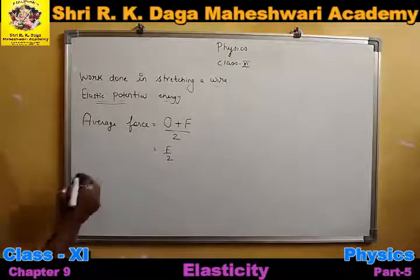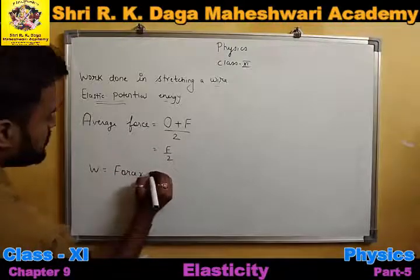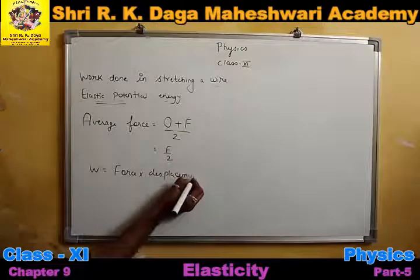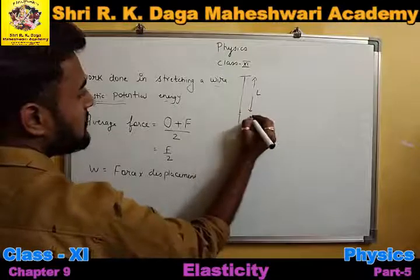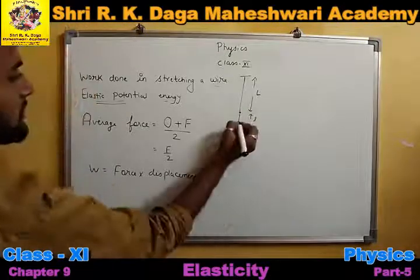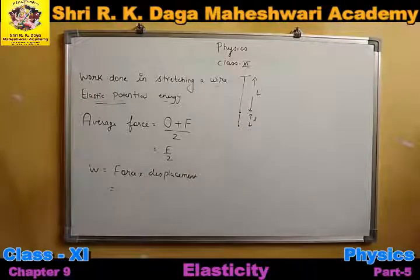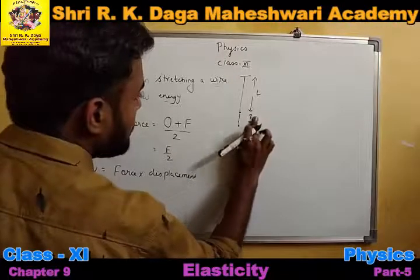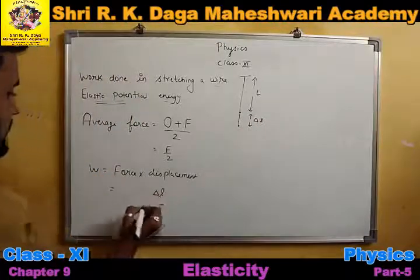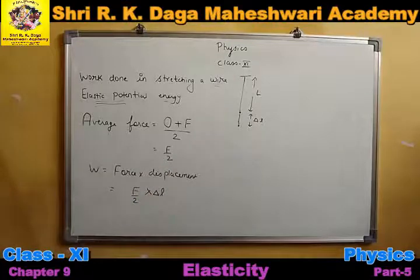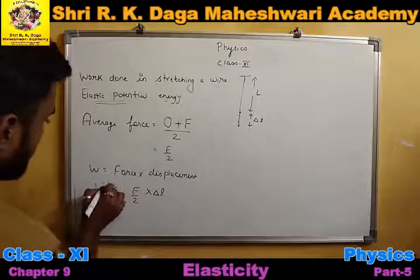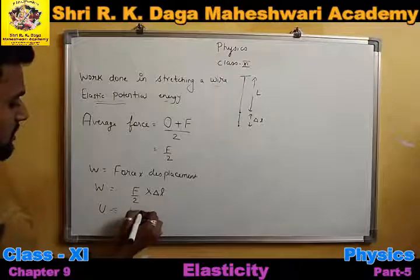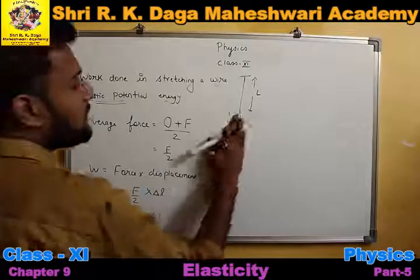Work done is given by force into displacement. In the case of a wire, displacement refers to the change in length. Originally the wire had length capital L; when a mass is suspended there is a small increase in length denoted by small l. So displacement is del L, force is F upon 2. Therefore work done U equals one-half times F times del L.